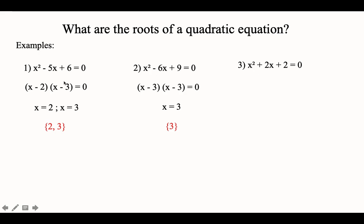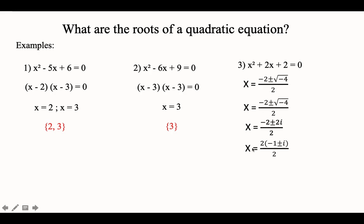In given number 3, this one is non-factorable, so we cannot use a factoring method. But we can solve it by using completing the square or by using the quadratic formula. Using the quadratic formula, x is equal to negative 1 plus or minus i, or we can separate this and write it as negative 1 plus i or negative 1 minus i. So we have two roots, but these two roots are two imaginary roots.